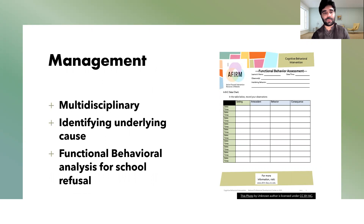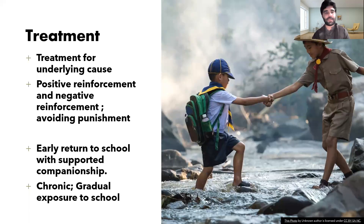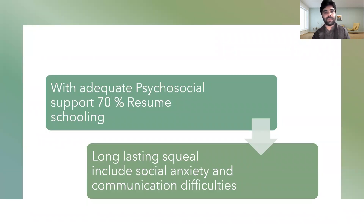The management of school refusal is multidisciplinary. The main concern is identifying the underlying cause and doing a functional behavioral analysis for school refusal behavior. The treatment is biopsychosocial. Psychosocial treatment is the mainstream treatment, in which treating the underlying cause is essential. For children with difficulty going to school, an early return to school with supported companionship is essential. In cases of chronic school refusal, gradual exposure to school is also important. With adequate psychosocial support, 70% of children resume schooling, while some may present with long-lasting sequelae in the form of depression, anxiety, social anxiety, and communication difficulties.